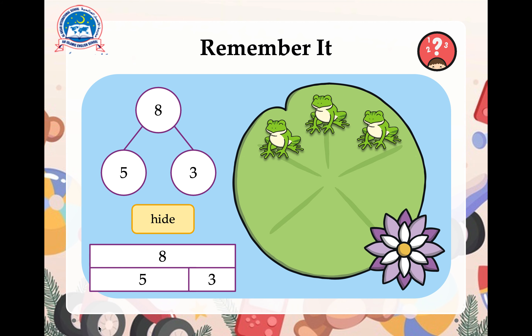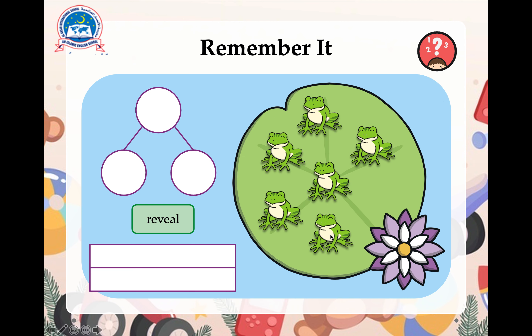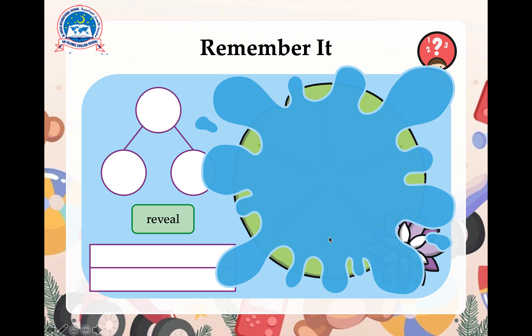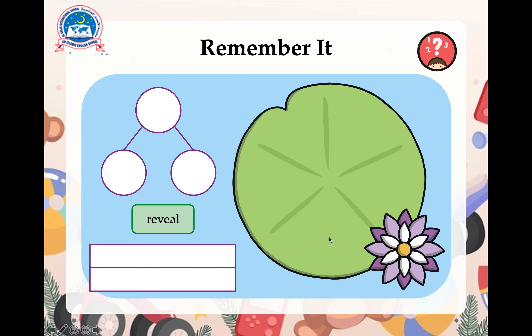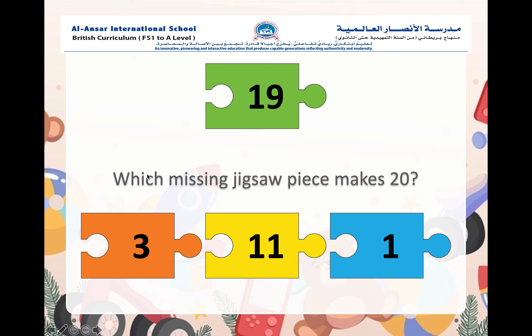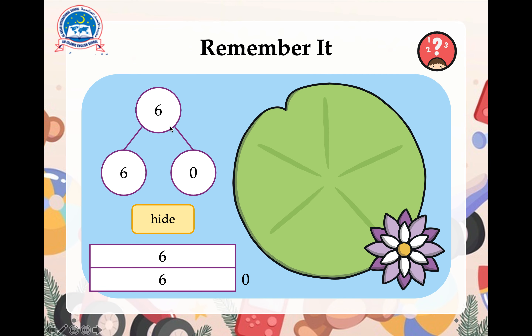Let's try another one. Here we have 6 frogs. Some jumped off. Now how many do you think jumped off? There were 6 on here and now there are 0. So if you've guessed that 6 and 0 make 6 — well done, you are correct!